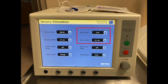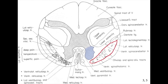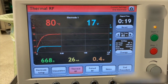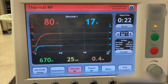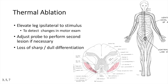Motor stimulation at 2 Hz with 0.1 millisecond pulse widths up to 1 volt is performed, at which time there should be no motor response. Ipsilateral neck contractions are commonly seen due to current spread to the anterior horn cells and ventral rootlets. Ipsilateral motor responses at less than 1 volt indicate the electrode is too close to the dorsal corticospinal tracts and warrants repositioning. Once position is verified, thermal ablation can be performed at 80 degrees Celsius for 60 seconds. During this portion of the procedure, the patient may elevate the leg ipsilateral to the stimulation but contralateral to the painful side in order to detect subtle changes in motor strength.